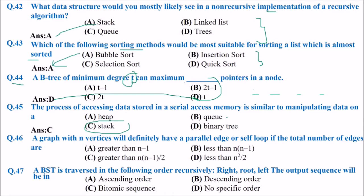A graph with N vertices will definitely have a parallel edge or self-loop if the total number of edges is greater than N minus 1. You will definitely have one of these two — either a parallel edge or a self-loop.